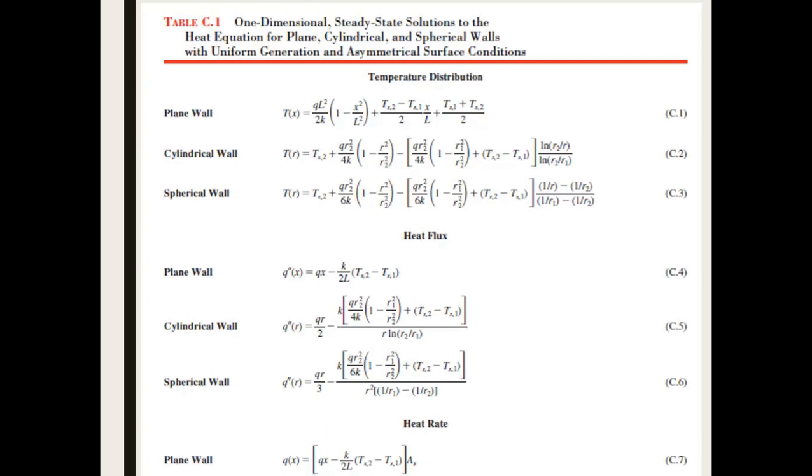Appendix C looks something like this, so the temperature distribution for a plane wall. Again, these particular conditions are one-dimensional, steady-state, when you have planar, cylindrical, or spherical walls, uniform generation, and you might have different surface conditions. You have T_s1 and T_s2 that are at different temperatures. I realize the resolution here is a little bit bad, I'm just trying to give you a glimpse at what that appendix looks like, but definitely open up your textbook and look at how those temperature profiles are for different systems, temperatures, and different conditions.